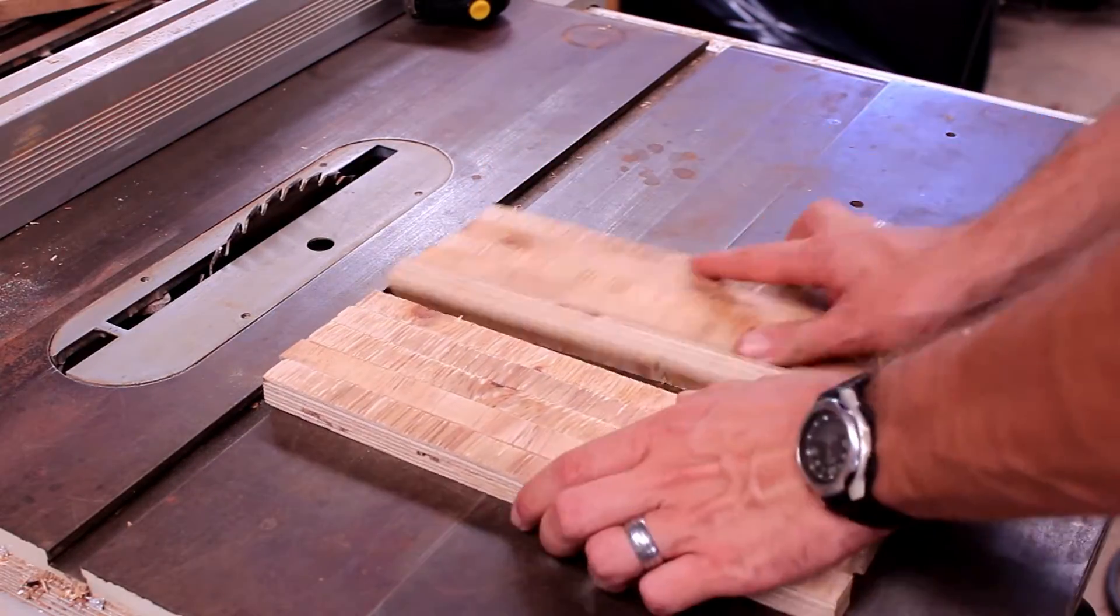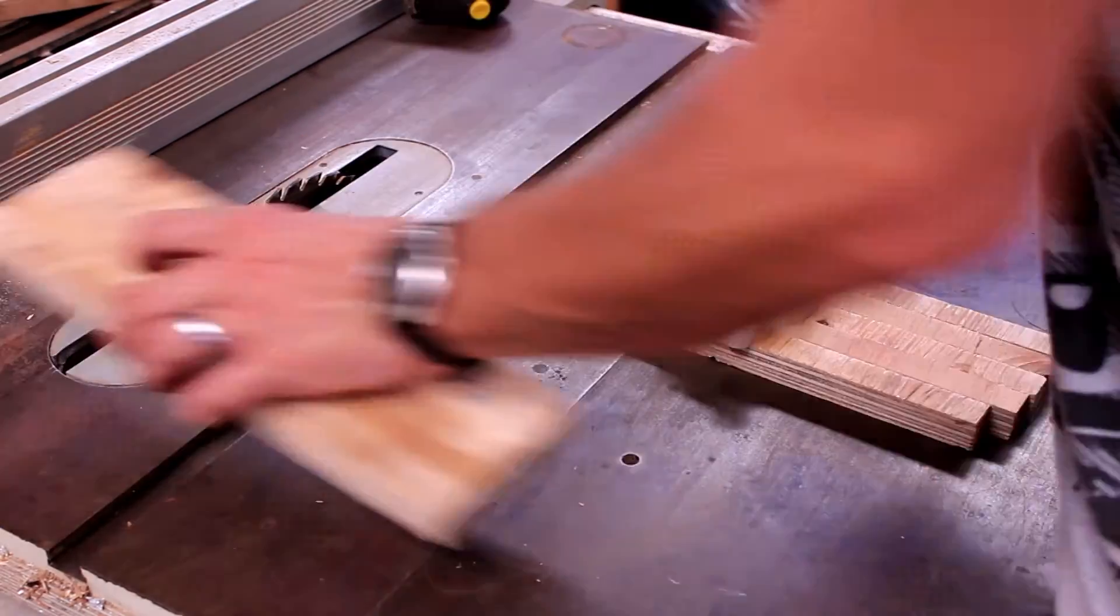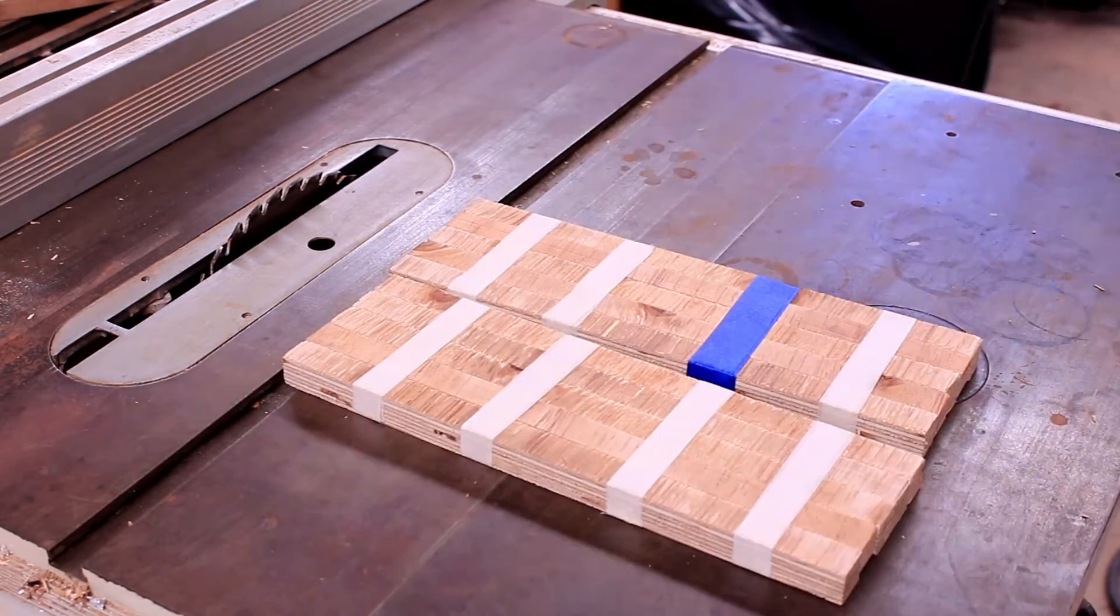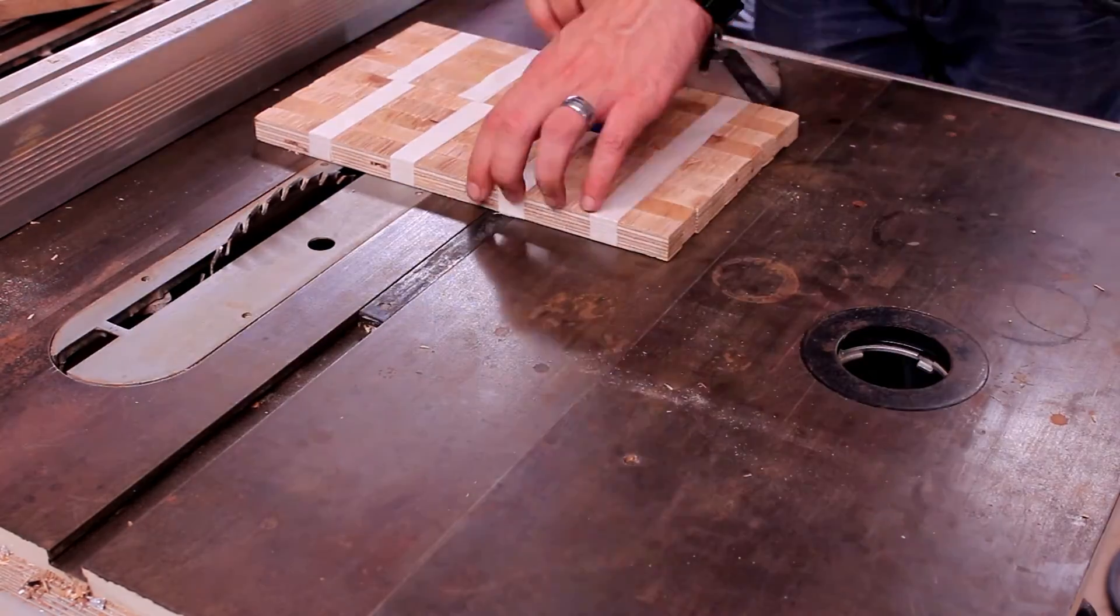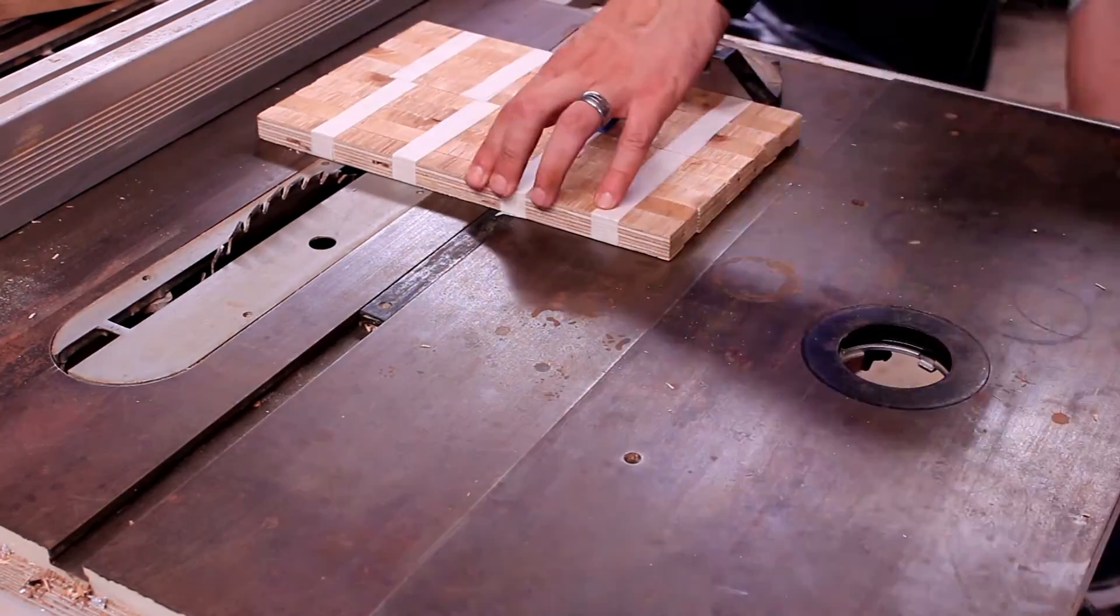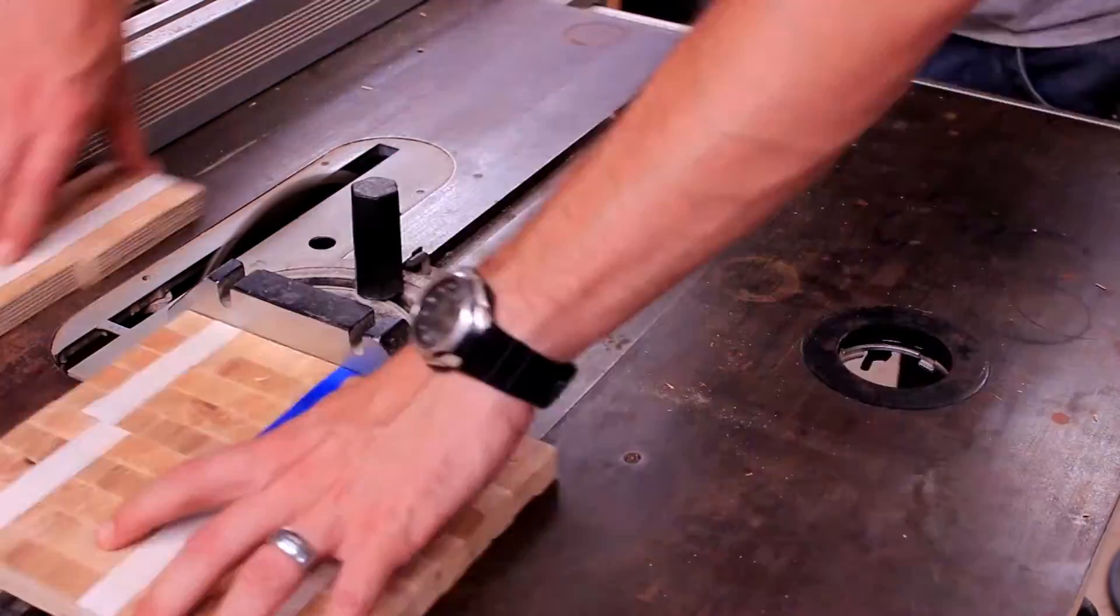After I cut all my strips, I take them and put them in pairs of five and tape them all together. This is just an easy way to cut them all to 77mm long. This is how long they need to be to fit into the iCAN calendar box.